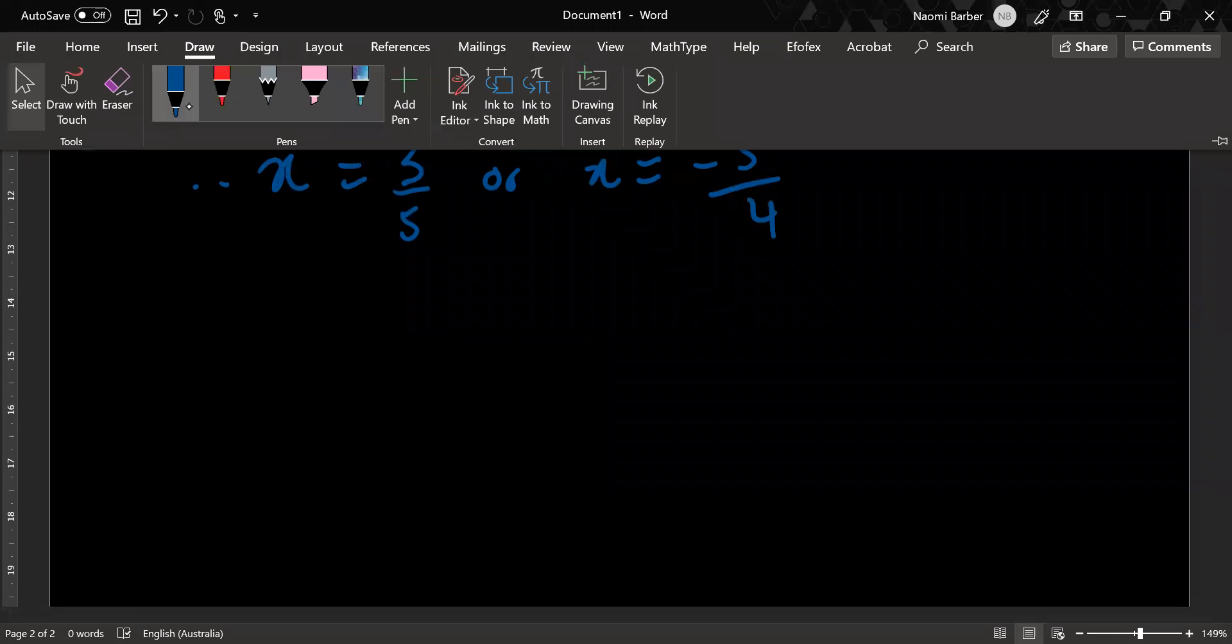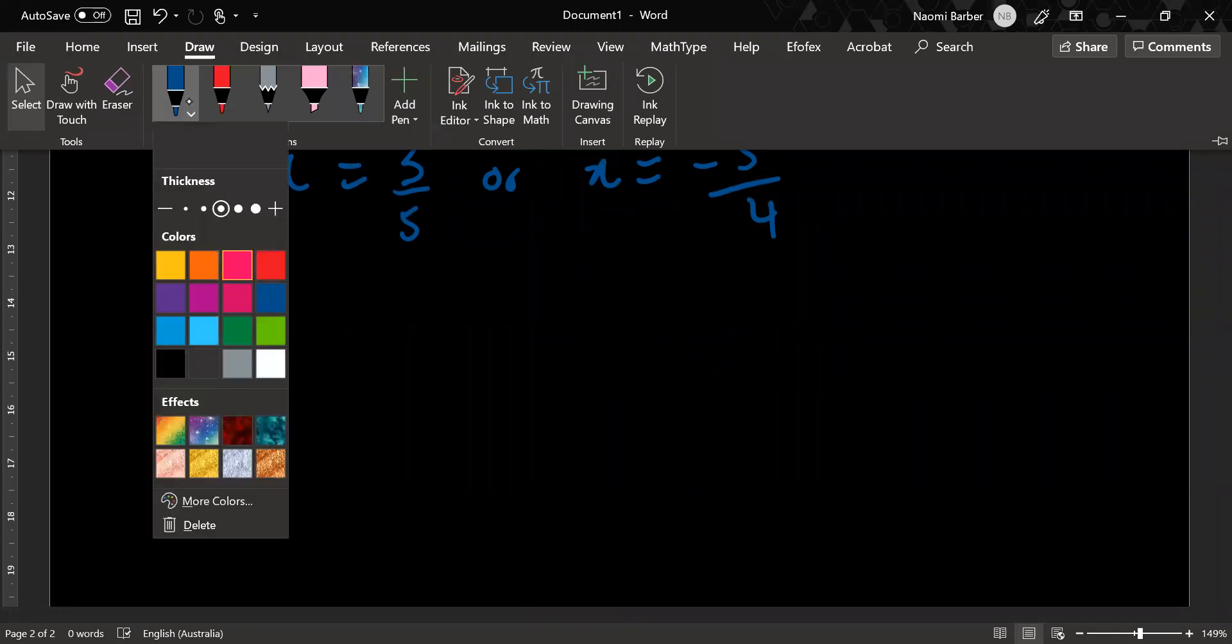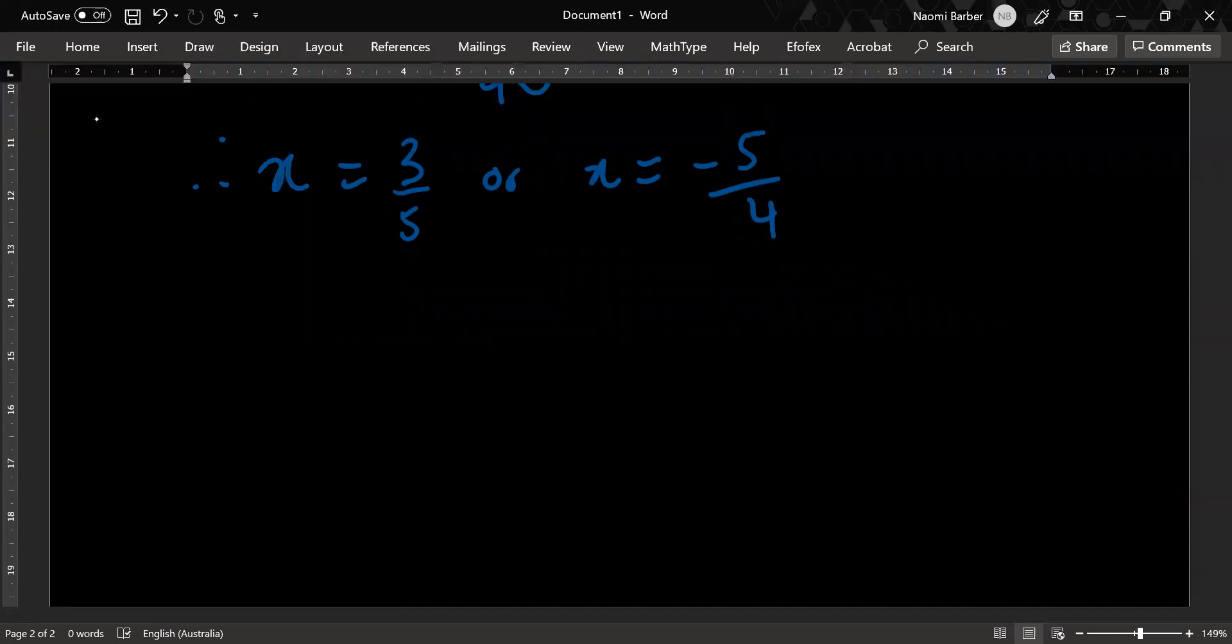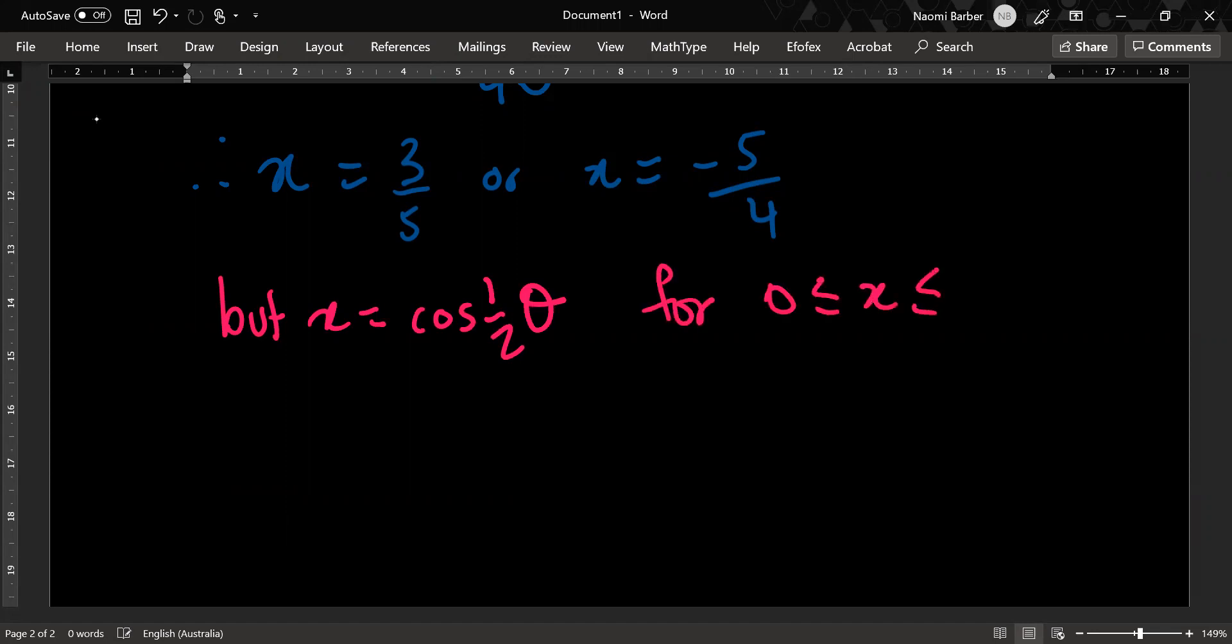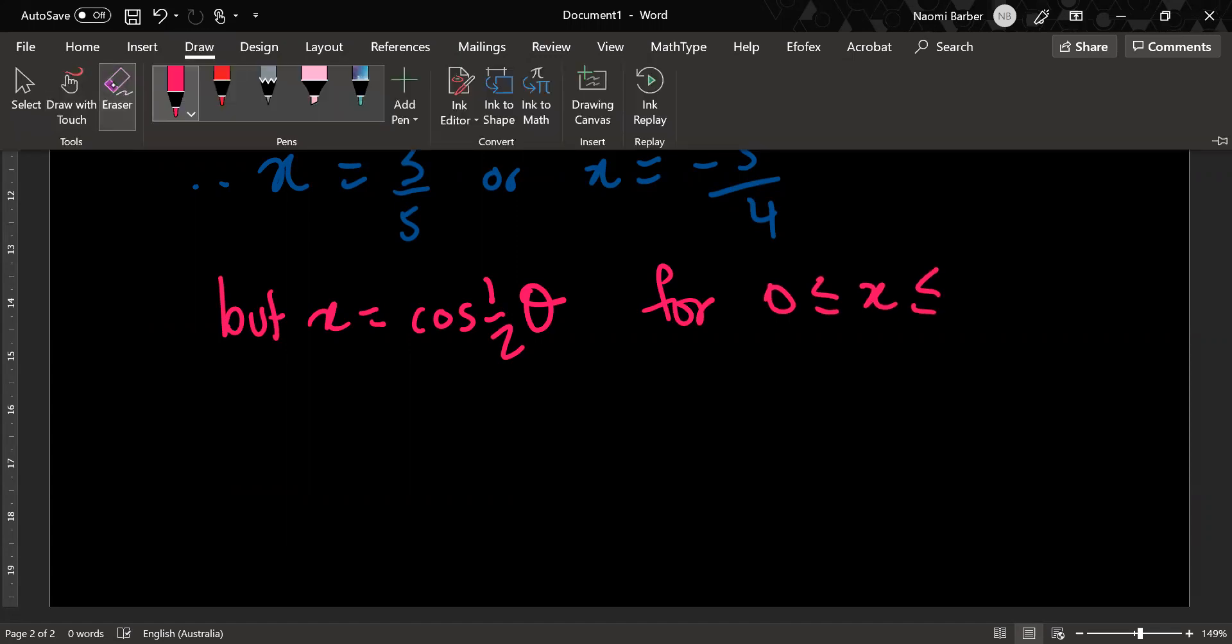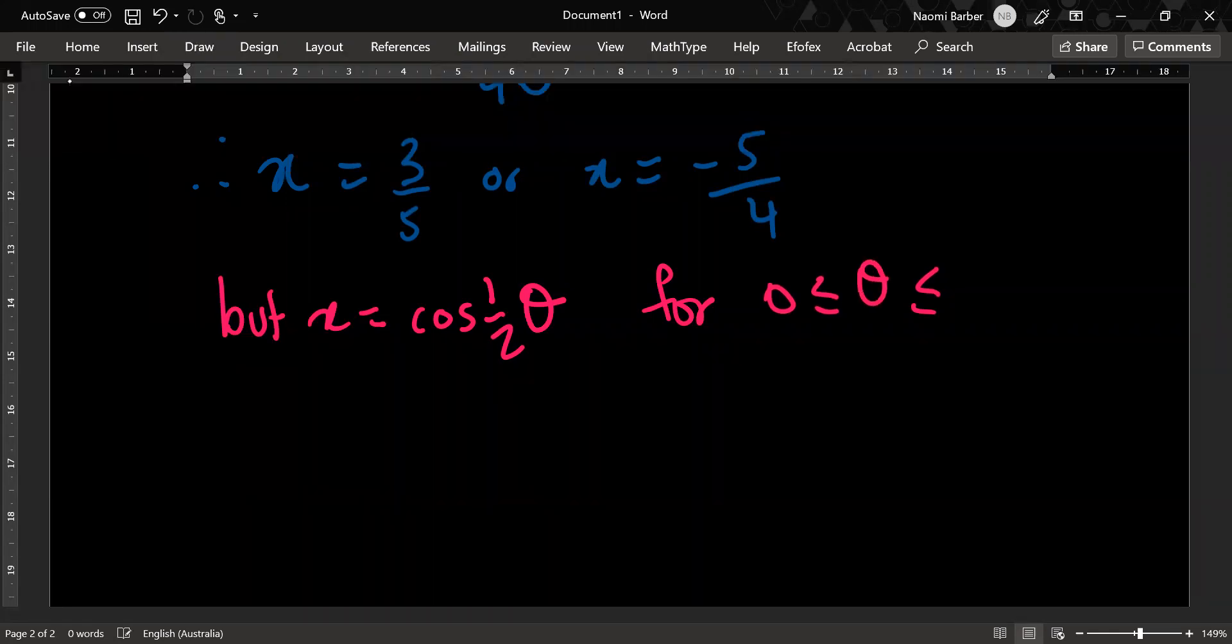I'm going to have to give you a domain at this point. Because we're now at the point where we have, but x equals cos half theta for theta between 0 and 360. Because we're going to work in degrees because it's a really gross question. But there's no reason why we couldn't work in radians, I suppose.